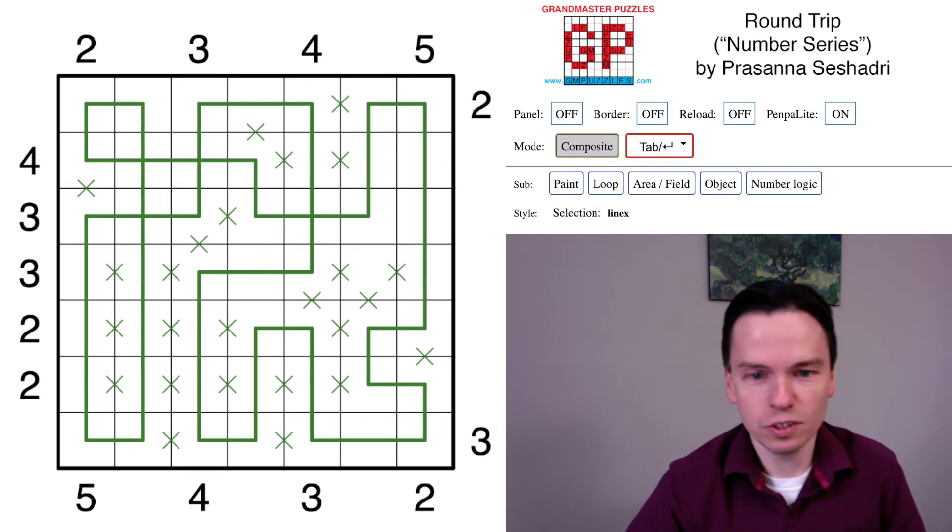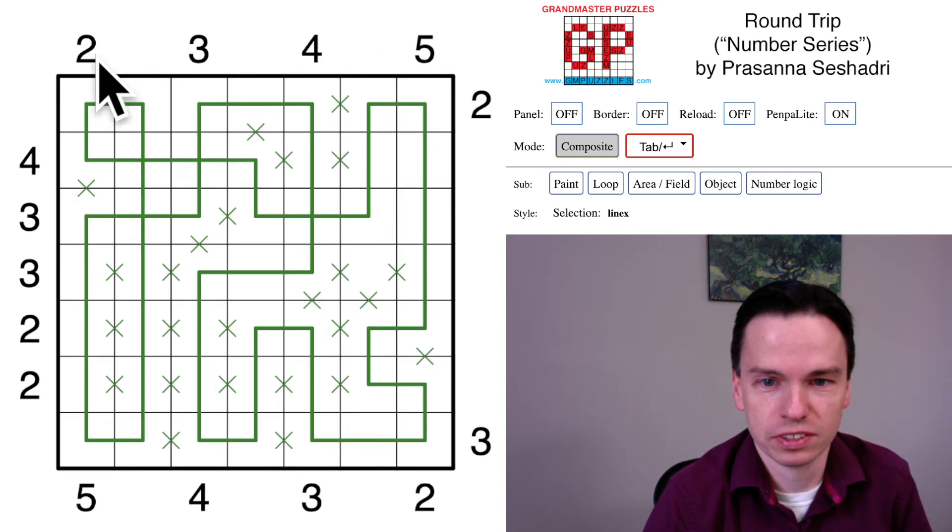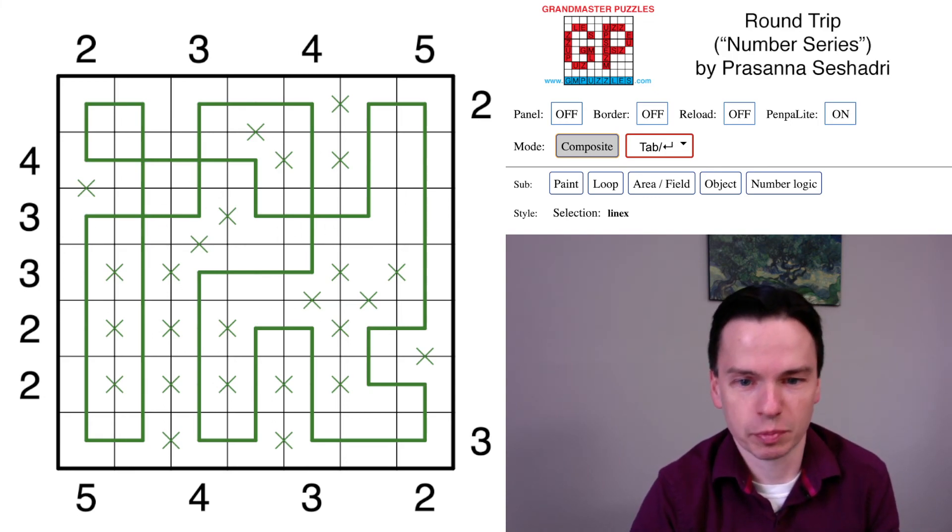So hopefully a good introduction to round trip puzzles. It started by using the outside clues in the columns, thinking about the rows, and thinking about how to form one loop. These steps will play out in harder ways through the rest of this week. So I hope you got something from this video, and we'll see you again soon.